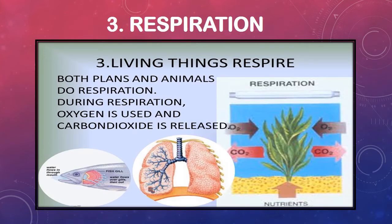Now the third characteristic is respiration. This applies to humans, animals, and plants. In respiration, we take in oxygen and our food is broken down in our body. Our body gets energy from this process and waste is produced. We call this respiration, and it occurs in humans, plants, and animals.